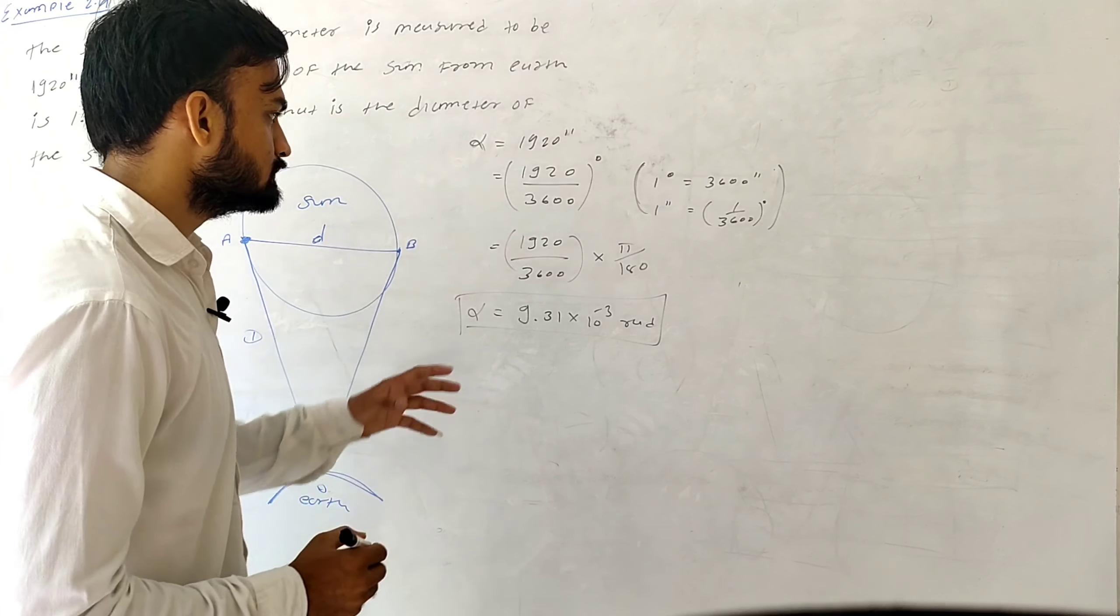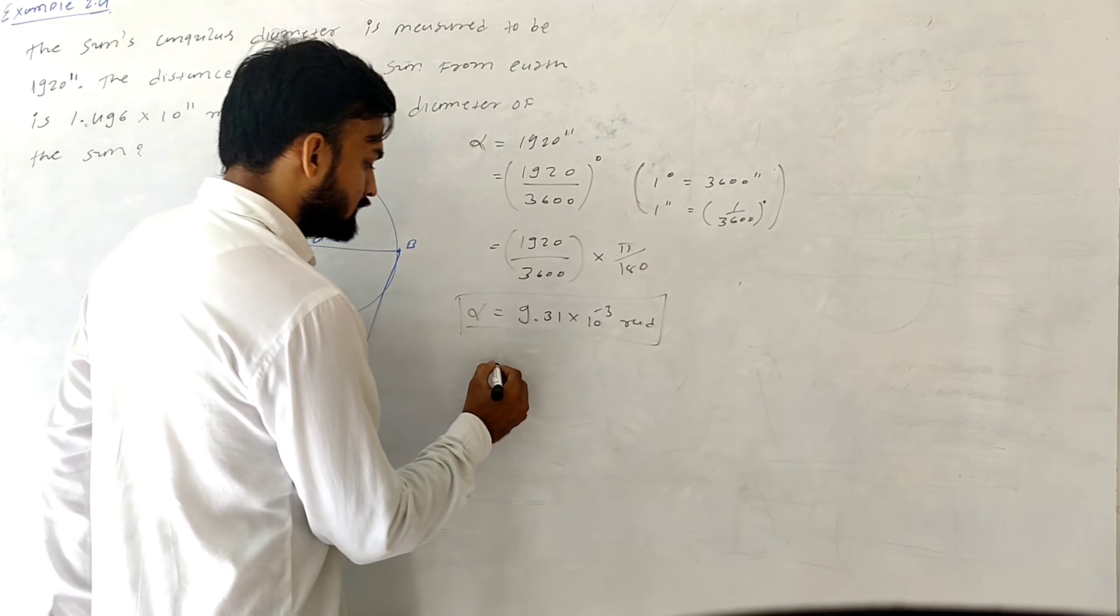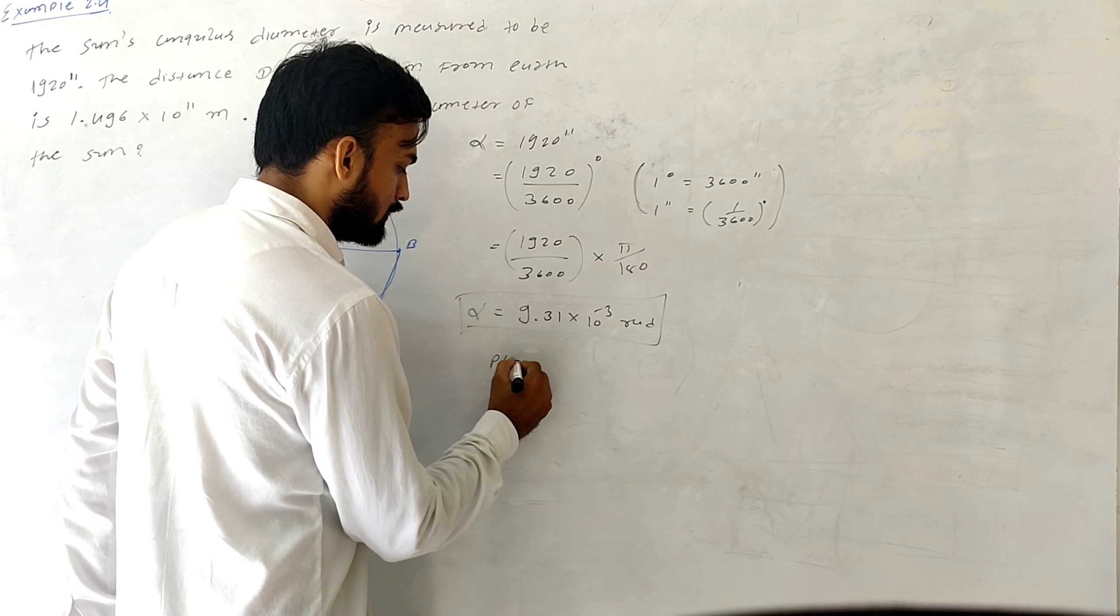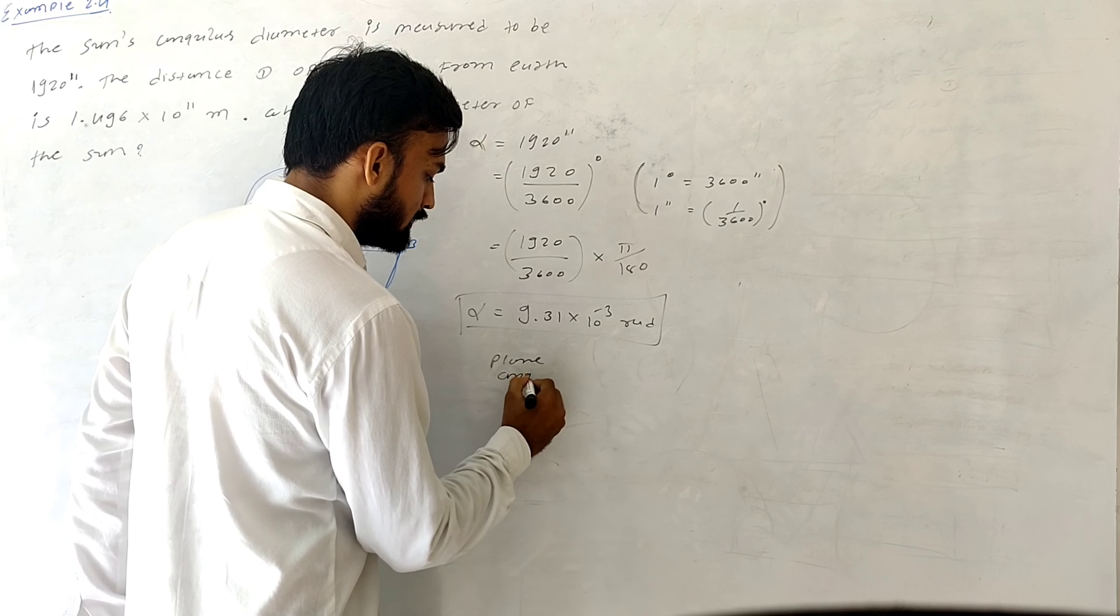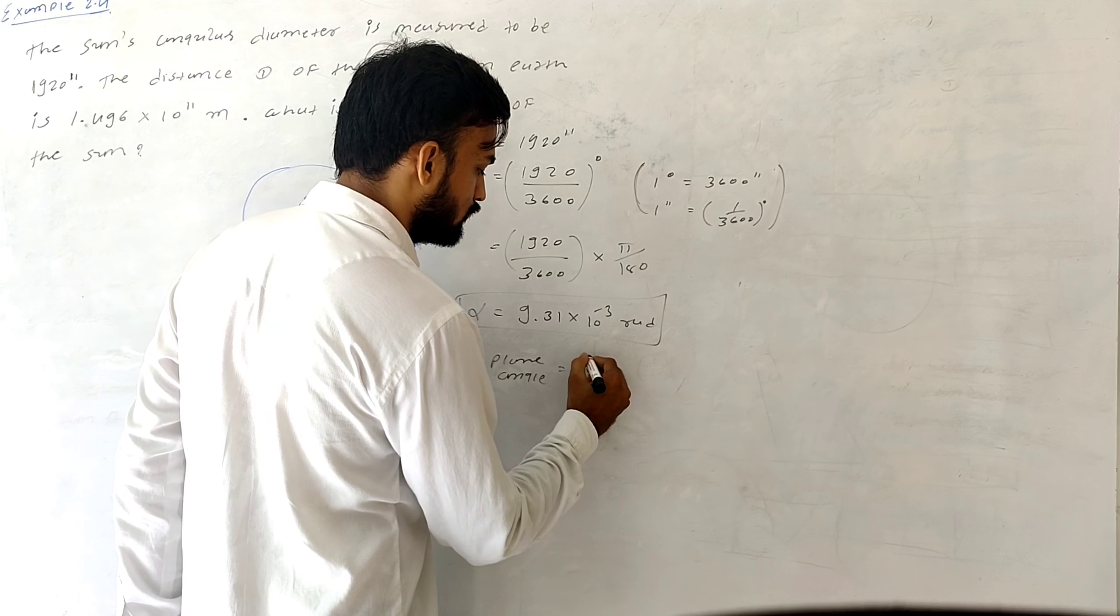Now we know that theta is equal to arc upon radius, which is the plane angle, and this is the length of arc.